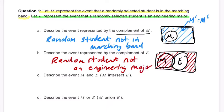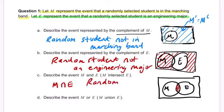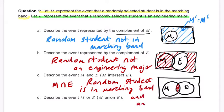Describe the event M and E, or M intersect E, which uses the intersection notation. We've got M and E, with engineering majors who are also in marching band sometimes overlapping. That overlap is called the intersection, and it represents a random student who is both in marching band and an engineering major.